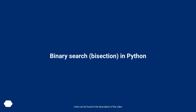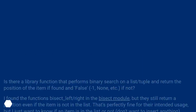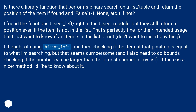Binary search, bisection in Python. Is there a library function that performs binary search on a list or tuple and returns the position of the item if found, or false, minus one, none, etc., if not?